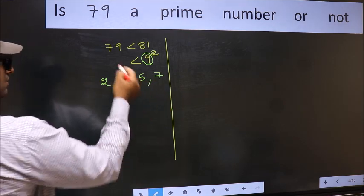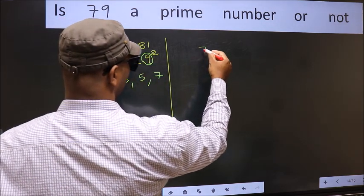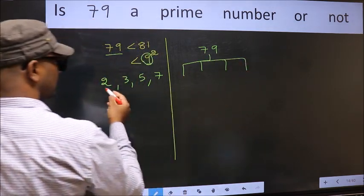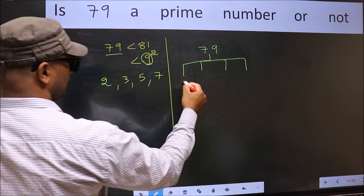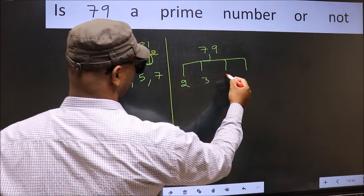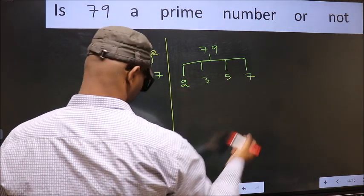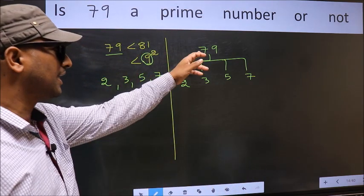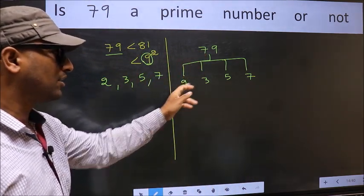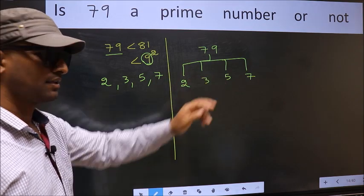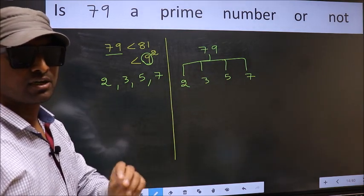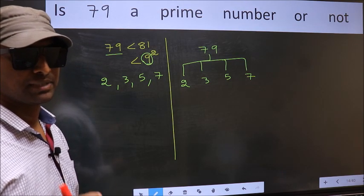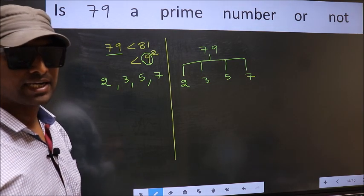Now, for the given number, we should check divisibility by these numbers: 2, 3, 5, and 7. If 79 is divisible by any one of these numbers, we say it is not a prime number. Otherwise, it is a prime number. Did you understand the method?